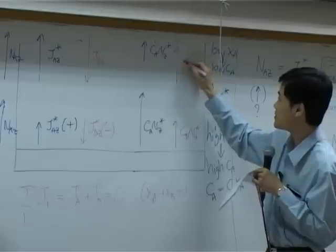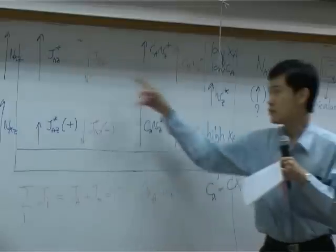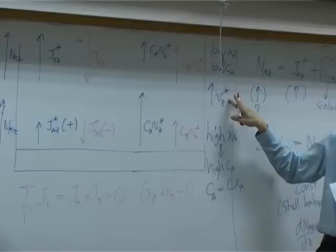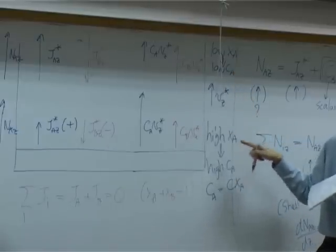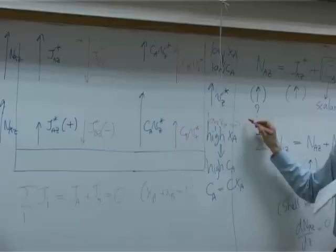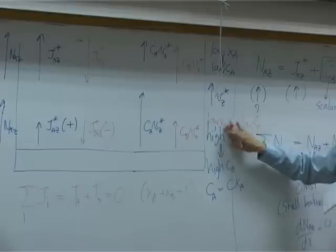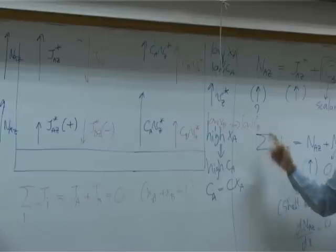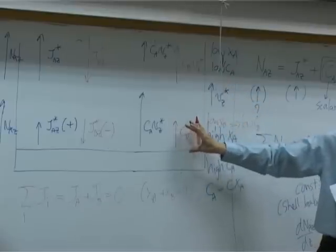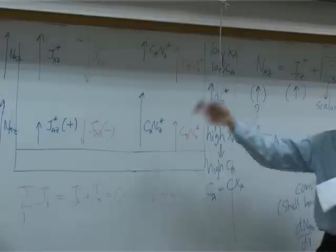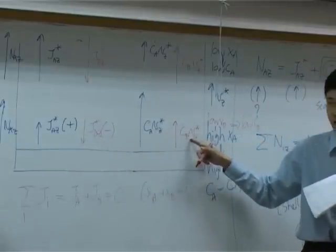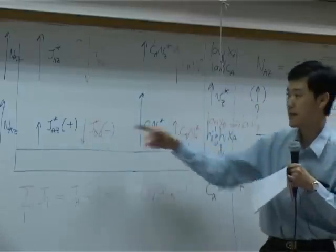Up at the top you have high c_b·v_z*, so that diffusion and convective terms of b always cancel. Since v_z* is upward and constant, but x_a is high at the bottom, x_b is low at the bottom. Low x_b means low c_b, so c_b·v_z* is small at the bottom. The whole picture: diffusion flux of a, diffusion flux of b, convective flux of a, convective flux of b, combined flux of a going up, and combined flux of b equal to zero at all times.